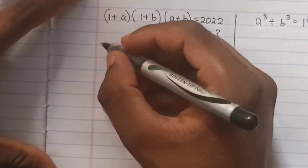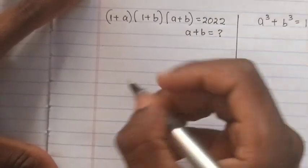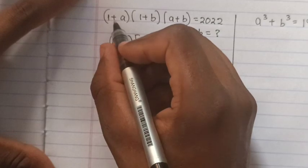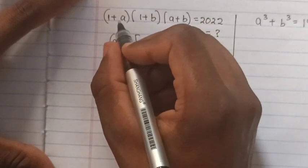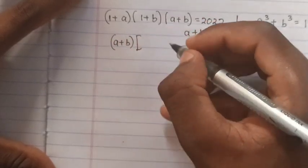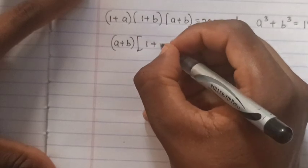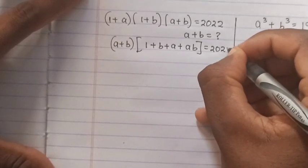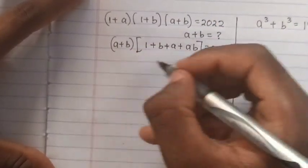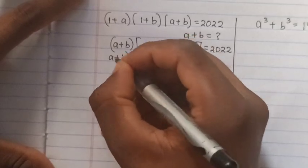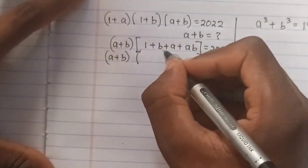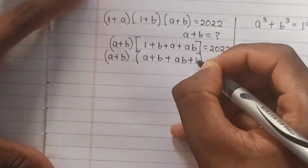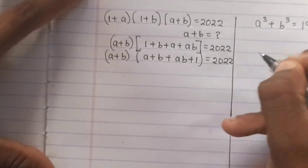Let's start with this equation first. We substitute ab outside the bracket, so here it will be a+b. Then we multiply: (1+a)(1+b) is the same as 1 + b + a + ab, which equals 222. Then from here, (a+b) is the same as a+b. We put like terms together: ab + a + b + 1, and this equals 222.